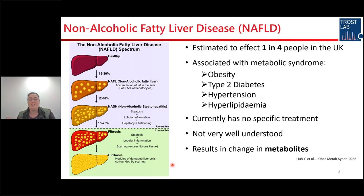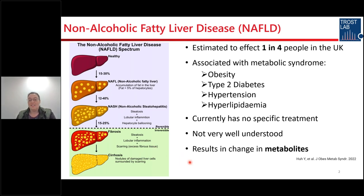NAFLD is currently the second most common cause for liver transplant and is set to become the first in the next few years. But it currently has no specific treatment and is not very well understood in terms of how progression happens between different stages. However, these different stages do result in changes in metabolites and proteins, and this is what I'm looking at in drug discovery.